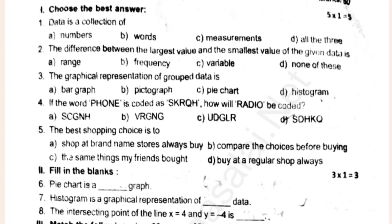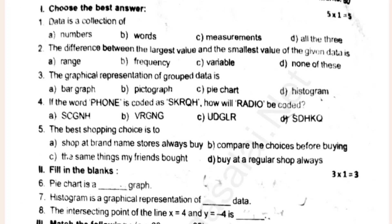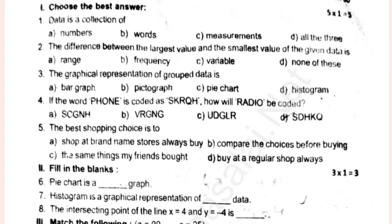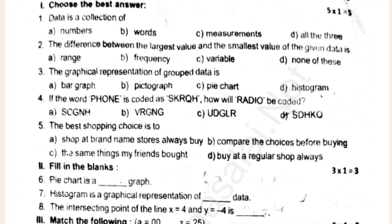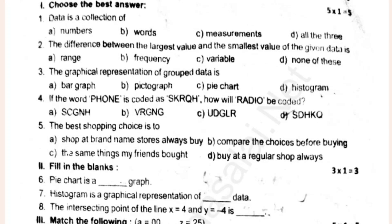Data is a collection. The difference between the largest value and the smallest value of the given data is the range. The graphical representation of grouped data — in the word 'phone' is called as SKRORQH. How will 'radio' be coded?